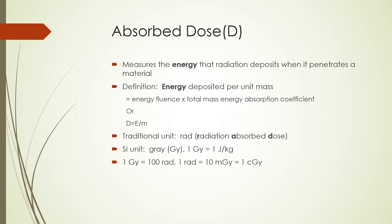The next term we shall define is the absorbed dose. When we defined exposure on a previous slide, we used the ionization of air as a measure. For materials other than air, for example for tissues, we use a different term, in recognition of the fact that chemical and biological changes in tissue exposed to ionizing radiation depend on the energy absorbed in the tissue rather than the amount of ionization that the radiation produces in air. To describe the energy absorbed in any type of medium, we use the term absorbed dose. The traditional unit of absorbed dose is the rad, which means radiation absorbed dose. The SI unit is the gray, where one gray is equal to one joule per kilogram, or one gray is equal to 100 rads.